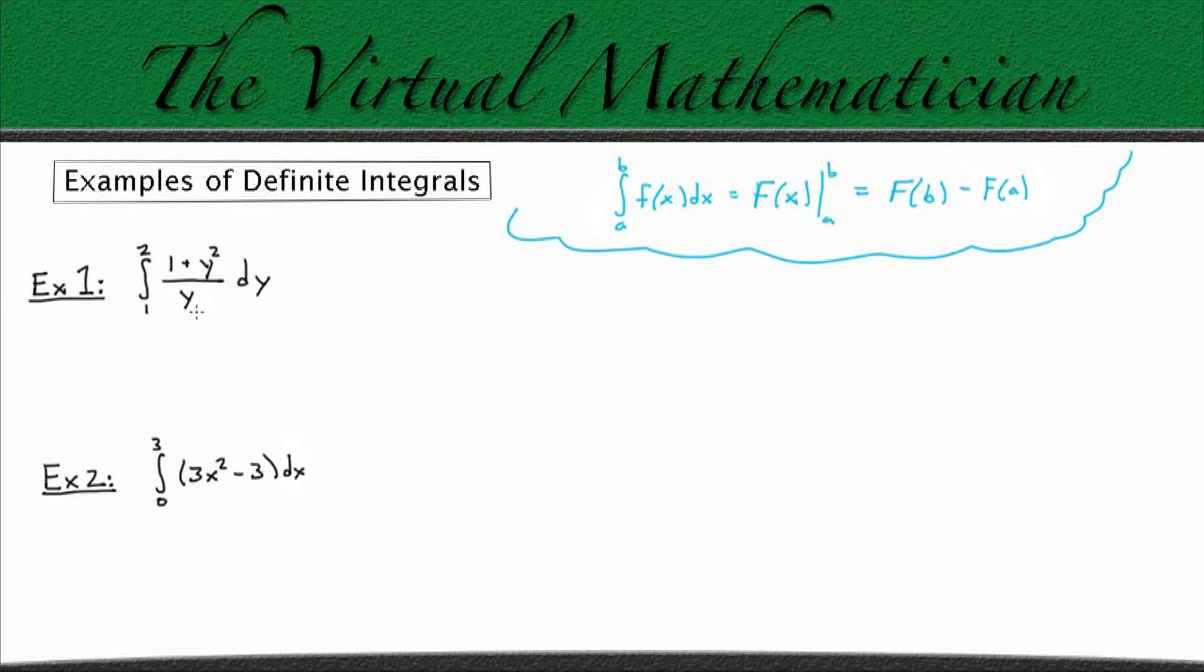The first thing we need to notice for this integral comes from algebra. Since there is an addition in the numerator, we can split this fraction up into two different fractions. So we can rewrite this as the integral from 1 to 2 of (1 over y) plus (y squared over y) dy.